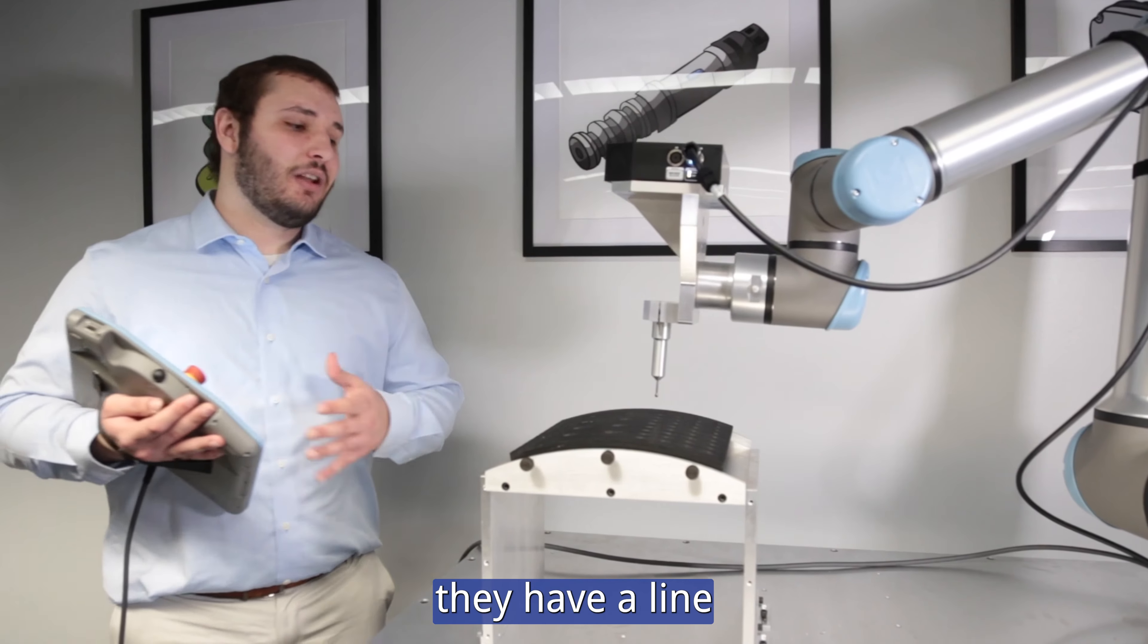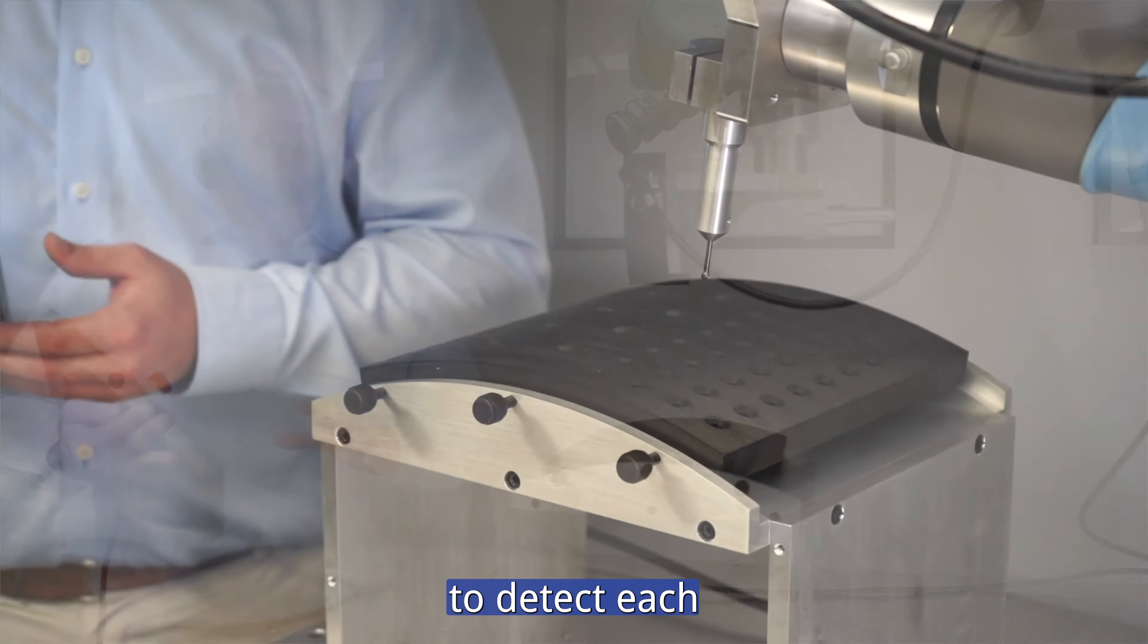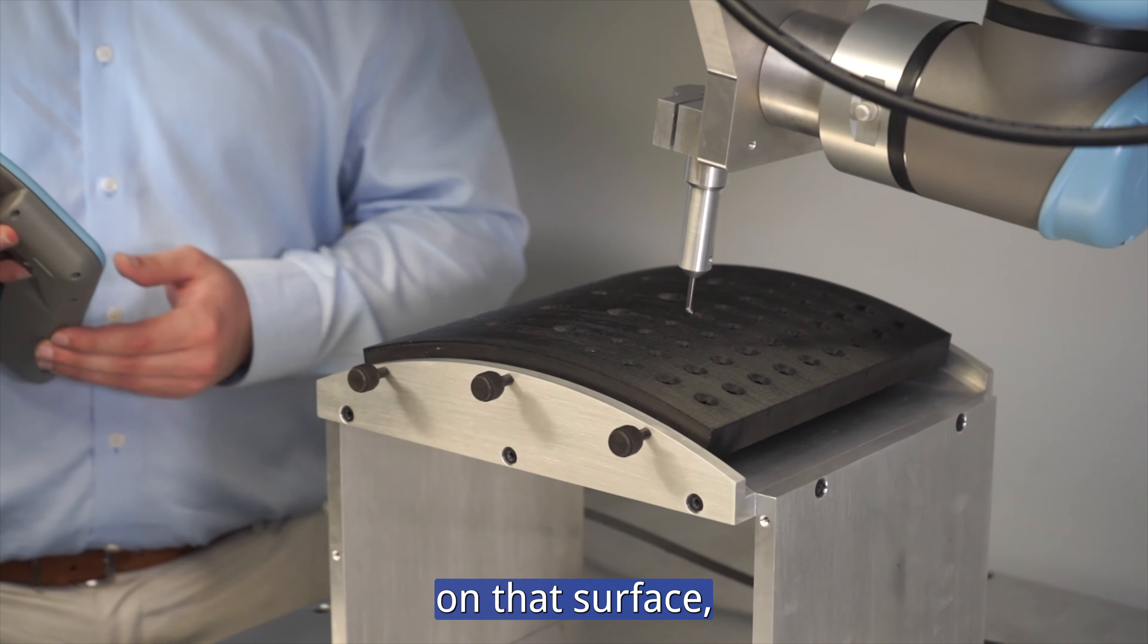Their problem is they have a line that runs multiple different parts through in multiple different orientations. They need to be able to detect each and every hole on that surface no matter the curvature.